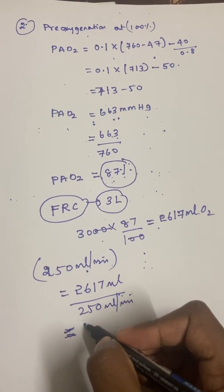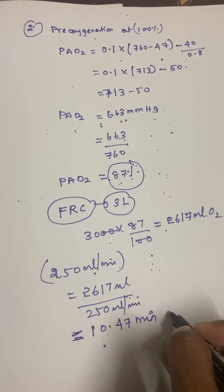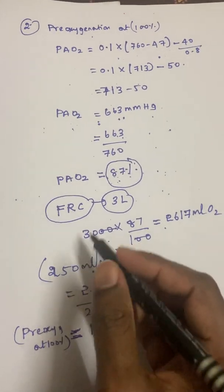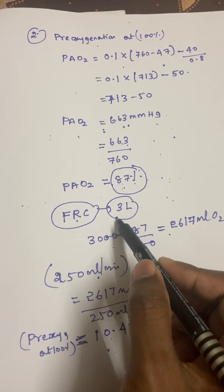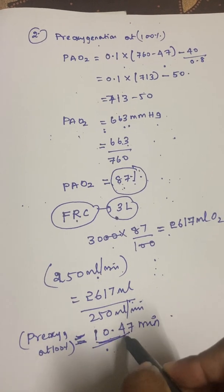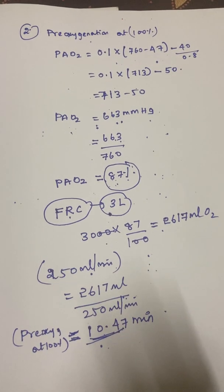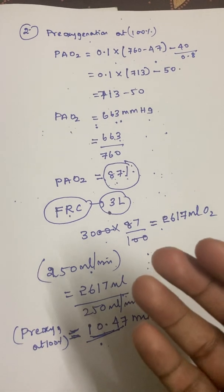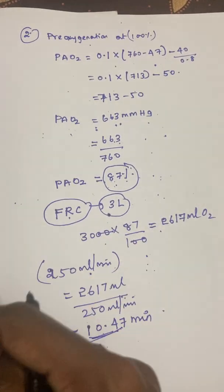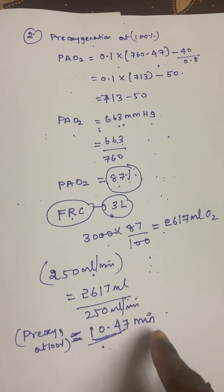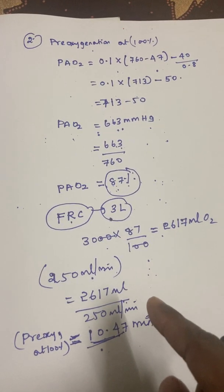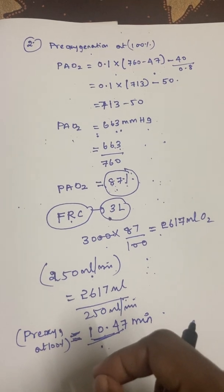Dividing 2,617 ml by 250 ml/min gives approximately 10.47 minutes. If you have adequately pre-oxygenated the patient for three to five minutes on 100% O2, you have a safe apnea period of about 10 minutes and 47 seconds. This compares to only 1.56 minutes on room air — a critical difference, especially if you encounter a difficult airway. The remaining topics will be discussed in the next video.